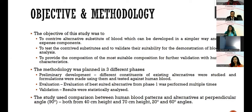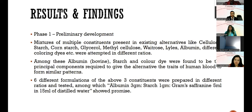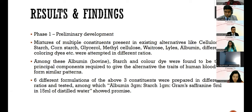The study compared human blood patterns and alternatives at perpendicular angles (90 degrees) from 40 cm and 70 cm heights, and at 20-degree and 60-degree angles. In phase one — preliminary development — mixtures of constituents from existing alternatives including cellulose, starch, cornstarch, glycerol, methylcellulose, albumin, and different coloring dyes were tested in different ratios. The principal components found to give the alternative the traits of human blood were albumin (bovine), starch, and color dye. Six different formulations were prepared, and the best composition found was 3 grams albumin, 1 gram starch, and 5 ml gram saffranine in 15 ml of distilled water, which showed promising results.